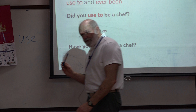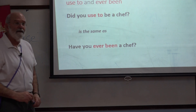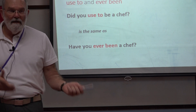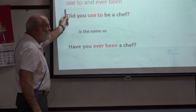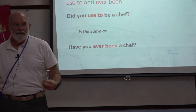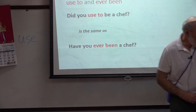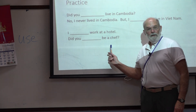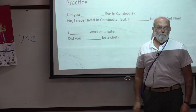You can also use 'used to' to mean the same thing as 'ever been'. Used to and ever been can mean the same thing. So we can say 'Did you used to be a chef?' — it's the same thing as saying 'Have you ever been a chef?' Same thing. It would be just as correct to say 'Have you ever lived in Cambodia?'